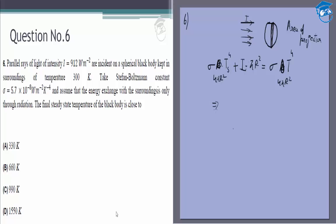From that we can get σ × 300^4 equals—we just divide by 4 everywhere—so this is I/4, sorry, plus 912/4 is equal to σT^4.